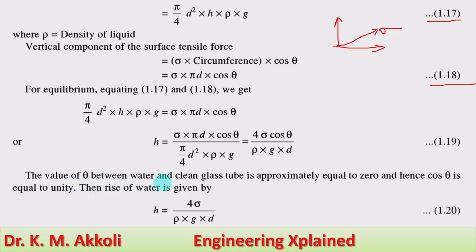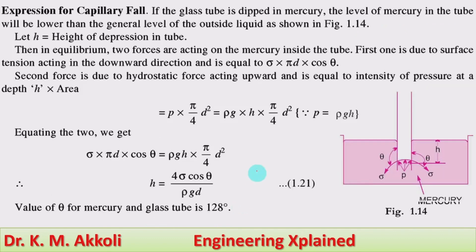The value of theta between water and a clean glass tube is approximately equal to 0, and hence cos theta equals unity. Therefore, the rise of water is given by h = 4 sigma / (rho × g × d). This is the expression for capillary rise, expressed in centimeters or millimeters.